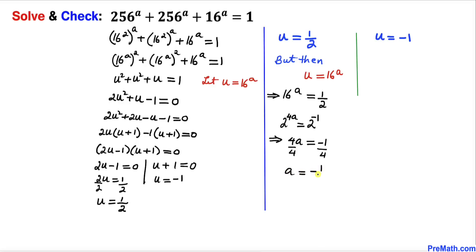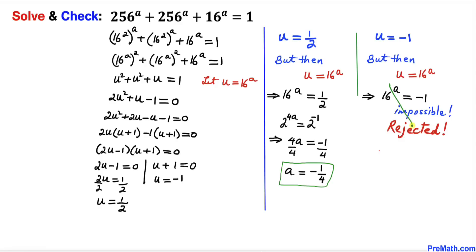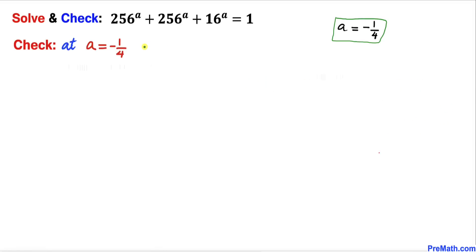Now focusing on u = -1: since u = 16^a, this means 16^a = -1. We know that an exponential function cannot equal a negative number, so this is impossible. Therefore this scenario is rejected.